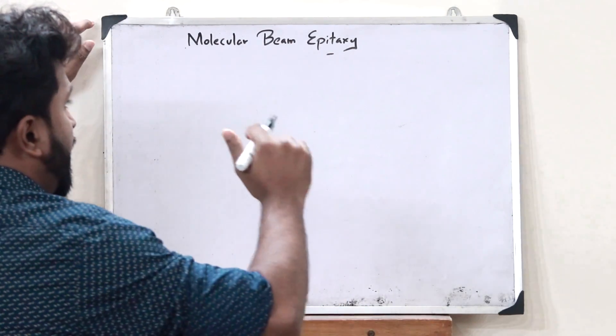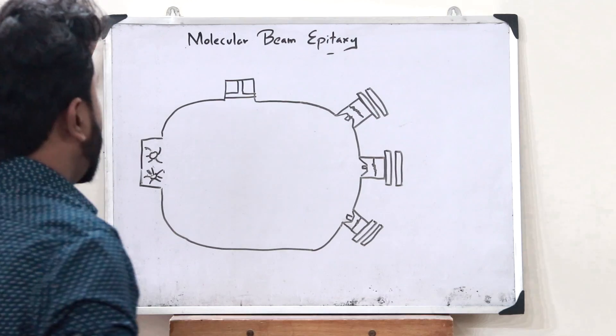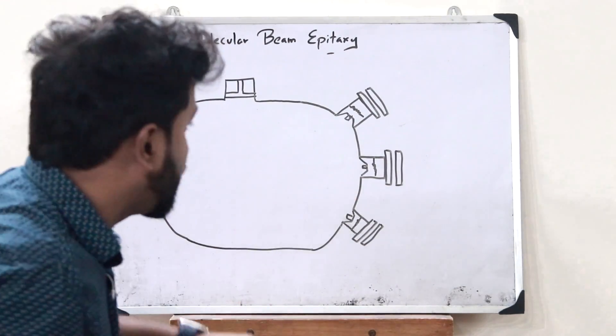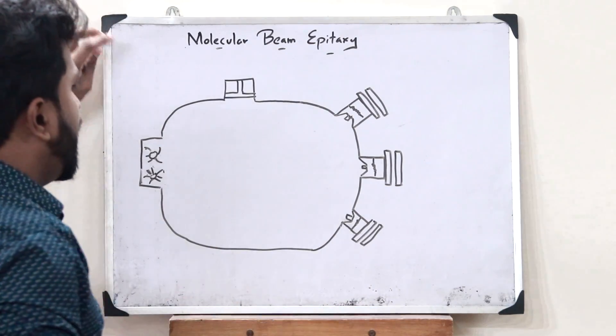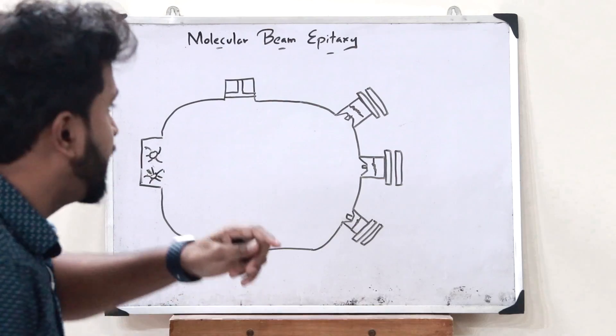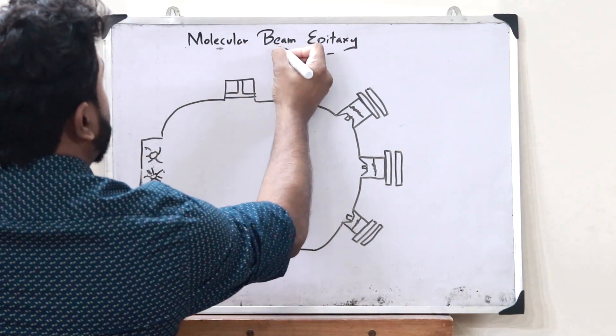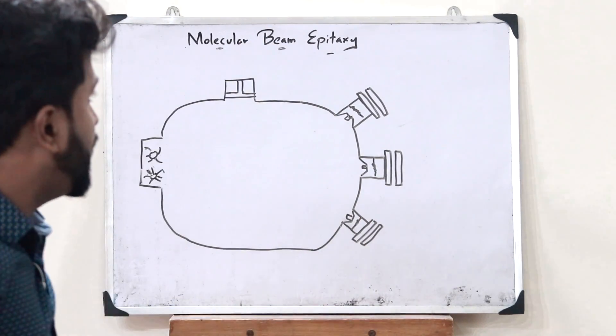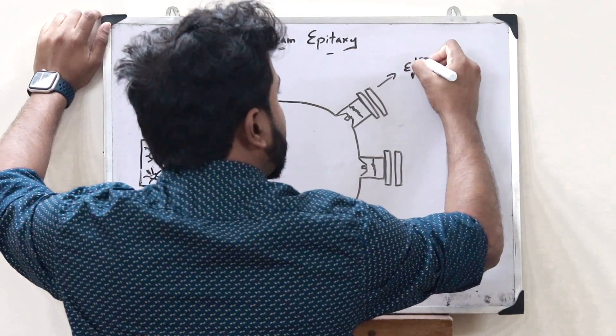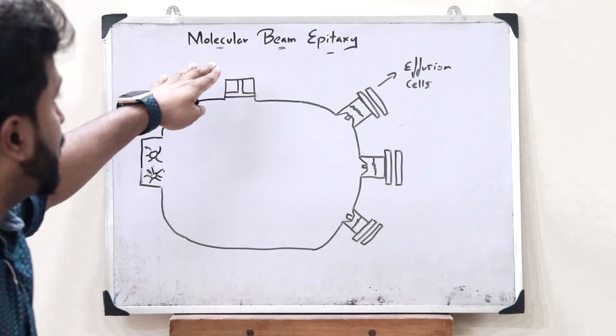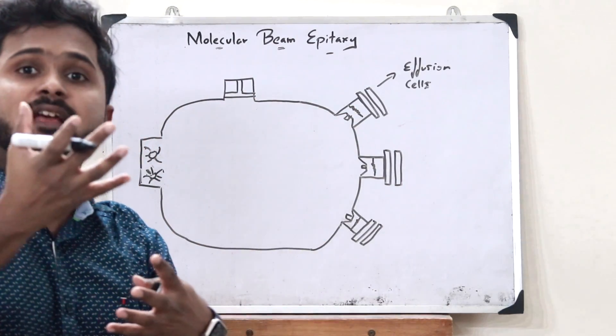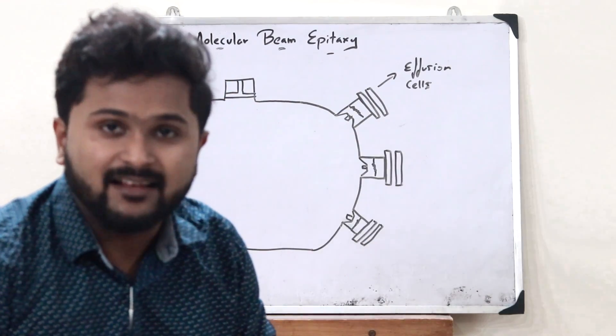So for this, we have a particular apparatus. So now here, this is the apparatus that is used for molecular beam epitaxy. Because for us to achieve molecular beam epitaxy, our first agenda or our first requirement is to get molecular beams. So here, we get molecular beams with the help of certain cells referred to as effusion cells. Here, effusion cells provide us with molecular beam by converting a certain material into its vaporized form. And hence, it is also referred to as evaporating cells.